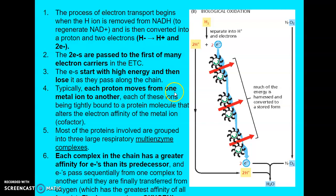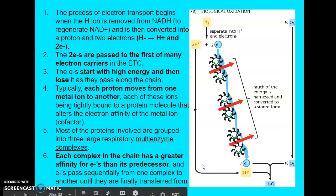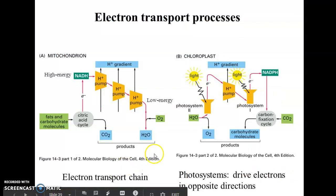Typically, each proton moves from one metal ion to another. All of these protein complexes have cofactors that bind very tightly to the ions. Most of the proteins involved are grouped into multi-enzyme complexes. Each complex in the chain has a greater affinity for electrons than its predecessor. The electrons are passed sequentially in order from one complex to another until they are finally transferred to the final electron acceptor, which is oxygen.